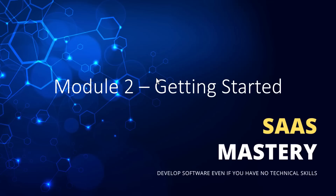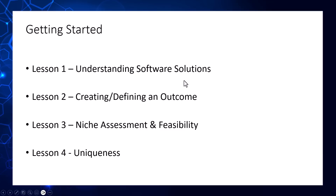Welcome to Module 2. Here we're going to go over some core concepts to get us started before we jump into the actual build-out of the application. We have four lessons in this module. The first is understanding software solutions. The second is creating and defining an outcome and success criteria for our application. The third lesson is going through the niche assessment and feasibility. And lesson four is testing for uniqueness for our software.